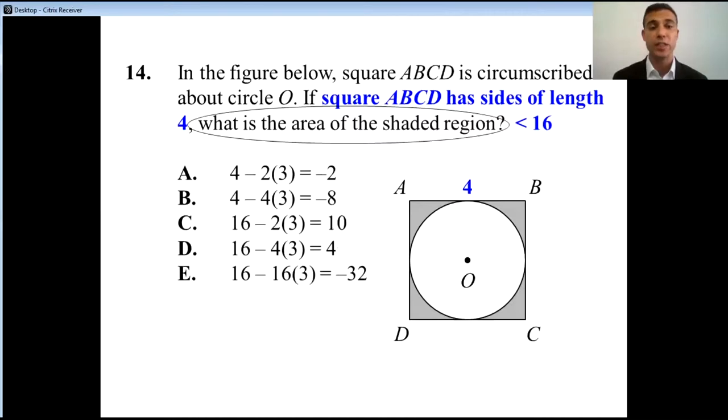If we take a look at our answer choices and we put in something for pi about 3, take a look at answer choice A. Answer choice A was 4 minus 2π, which means it's 4 minus 6, roughly, which is negative 2. Negative 2? Can the shaded region be negative 2? No, that would be impossible. So if that's going to be impossible, A is out.